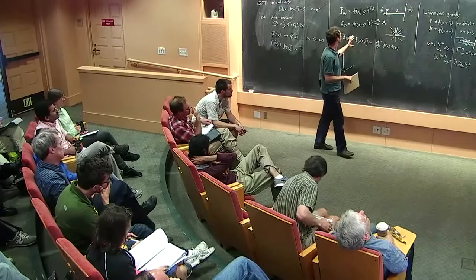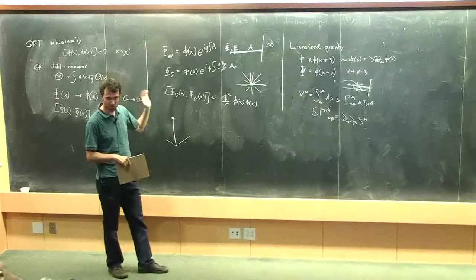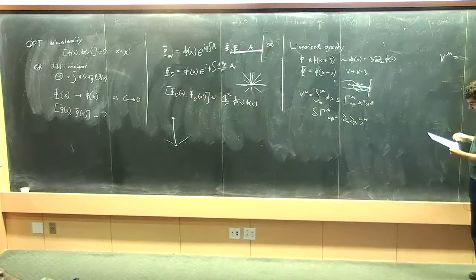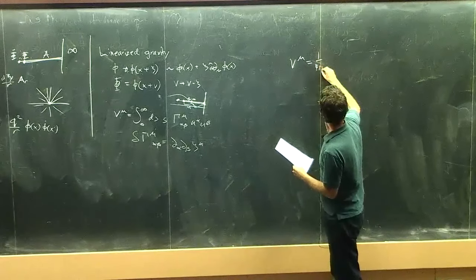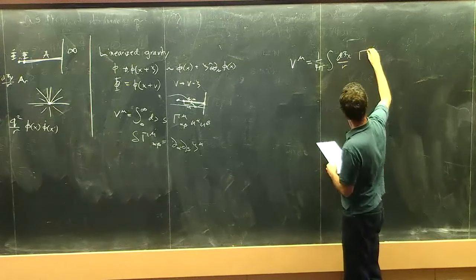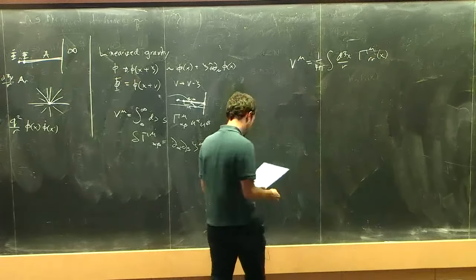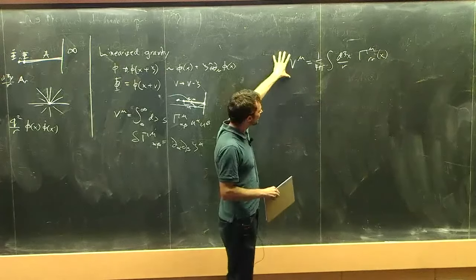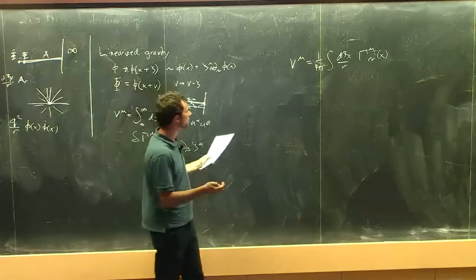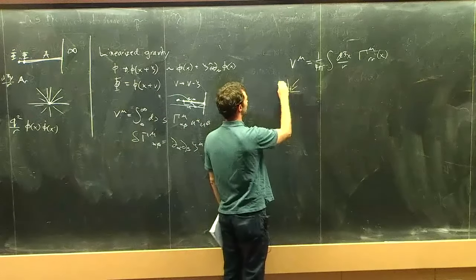In analogy to QED, where the Dirac-type solution is obtained by averaging the Wilson line over all directions, we average the gravitational geodesic construction. Acting on the vacuum with this dressed operator generates a scalar particle plus a linearized Schwarzschild solution around it.